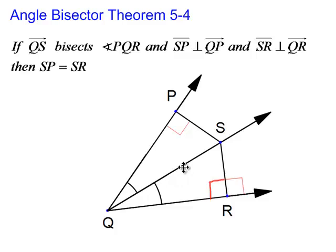We have a shared side here, and we have a right angle, so we are dealing with angle-angle-side and angle-angle-side to show that those two triangles are congruent. So of course SP and SR are congruent.